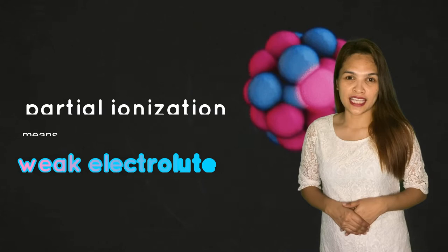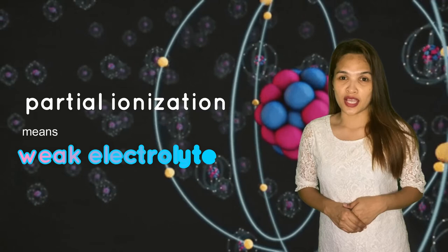If a substance only partially ionizes in a solution, in other words, some particles dissociate and some do not, this will be called a weak electrolyte, which still conducts electricity, but not as good as the strong electrolyte.